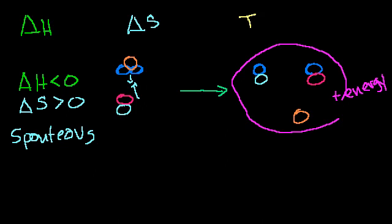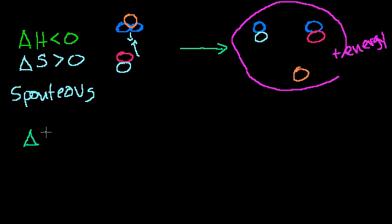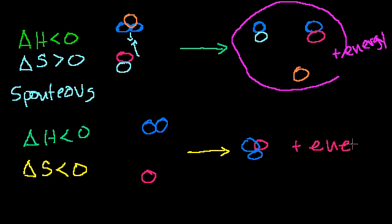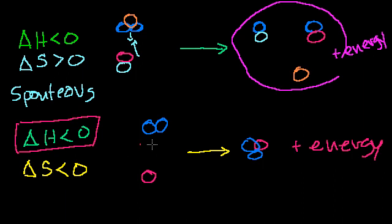What happens if my delta H is less than zero but we lose entropy? That would be a situation where two particles bump into each other and form one combined molecule. Their electrons enter into lower potential states and when they do, they release energy — plus energy here. We know that because the change in enthalpy was less than zero — we have lower energy in the product state than the reactant state, and the difference is released.